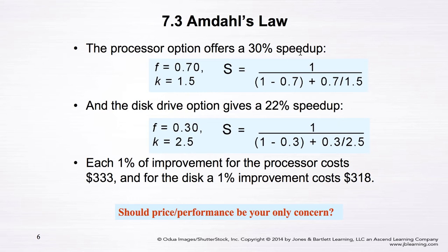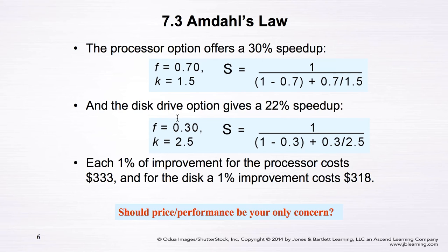For the second option — upgrading the disk drive — f equals 0.3, representing the fraction of time spent on the disk drive. k equals 2.5, because the disk drive upgrade increases disk access performance by 150% compared to the existing disk drive. Substituting these parameters into Amdahl's Law, we find that upgrading the disk drive gives a speedup gain of approximately 22%.